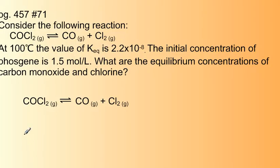This is a problem from your textbook, so we have here a decomposition reaction, and this is phosgene gas decomposing into carbon monoxide and chlorine. And we've got some given information here. KEQ is 2.2 times 10 to the minus 8, and we're given the initial concentration of the COCl2, the phosgene gas. So 1.5 moles per liter is that concentration to start out with. And we're asked, what are the concentrations of carbon monoxide and chlorine at equilibrium?